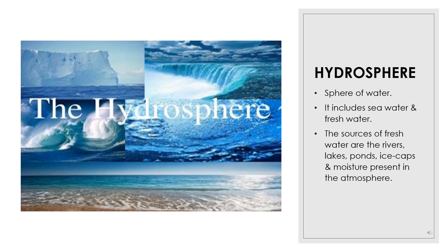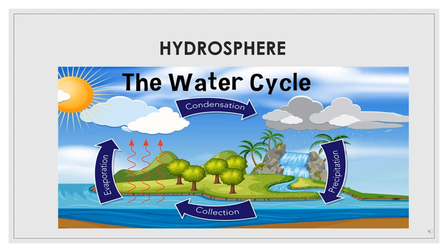The sources of fresh water are rivers, lakes, ponds, ice caps, and also the moisture which is present in the atmosphere. As we all know, water is constantly in motion — it is in motion due to evaporation, condensation, and precipitation. All these processes are happening again and again.